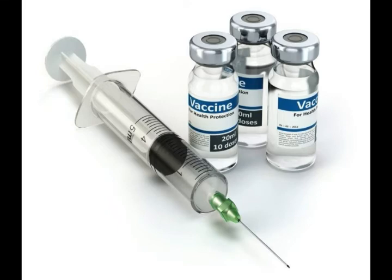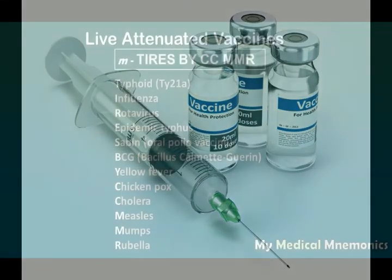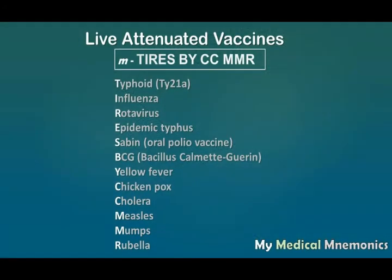Live attenuated vaccines can be easily remembered by the mnemonic: TIRES BY C2MMR. The mnemonic may not look good, but when you repeatedly say TIRES BY C2MMR, it is going to help you a lot. Every letter of this sentence is the name of a vaccine.